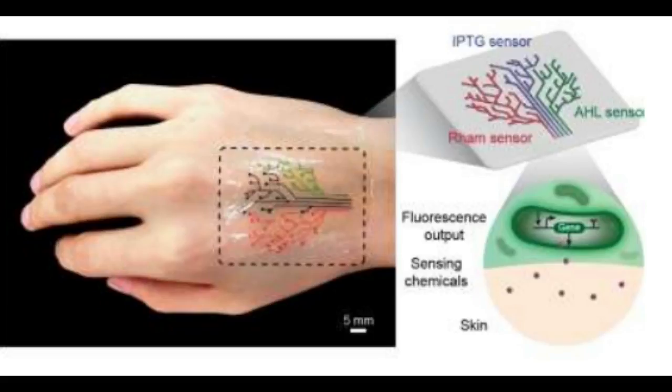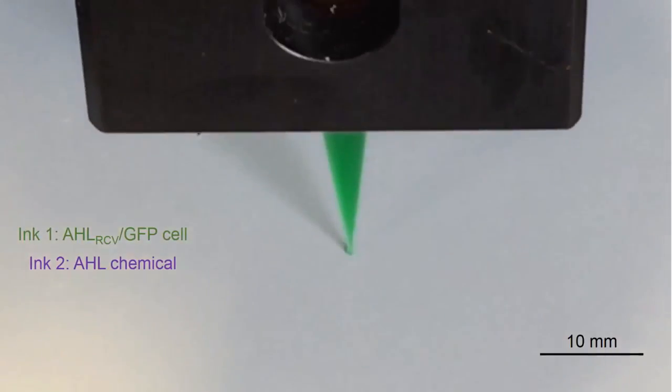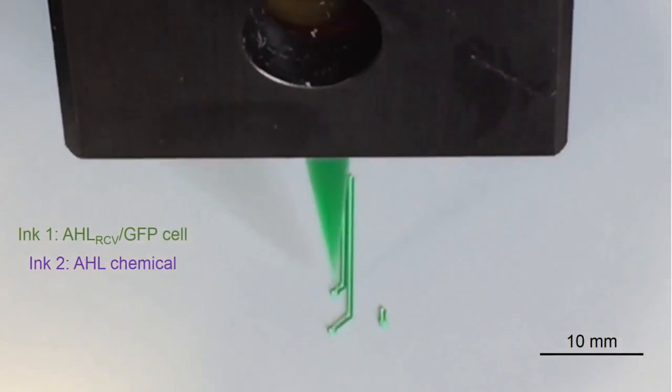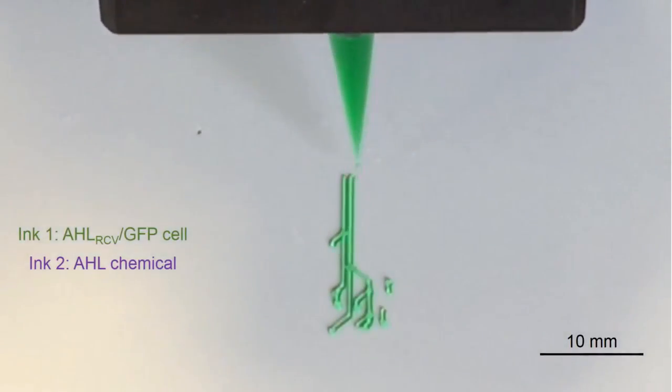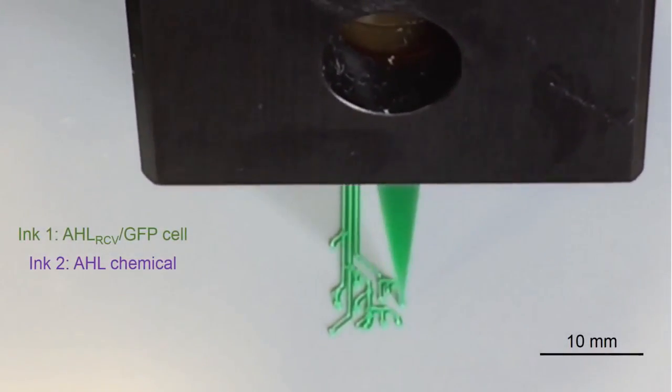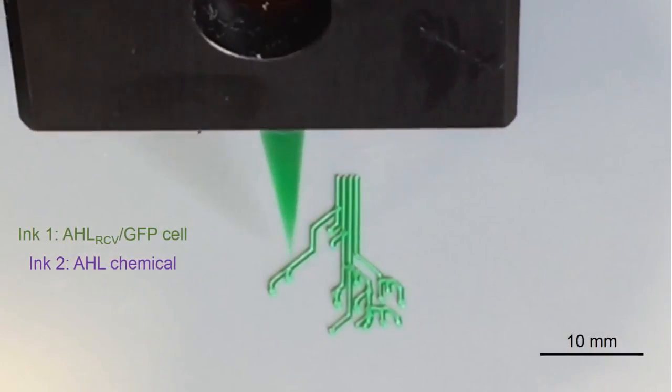When mixed with a slurry of hydrogel and nutrients, the cells can be printed layer by layer to form three-dimensional interactive structures and devices. The team has demonstrated its technique by printing a living tattoo.